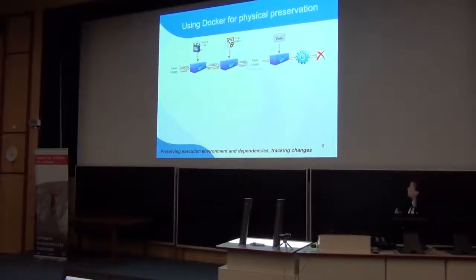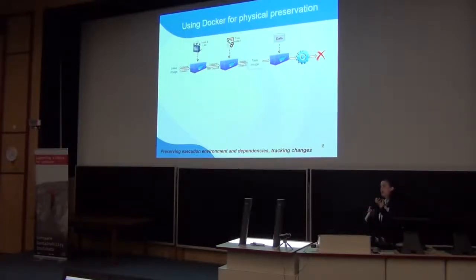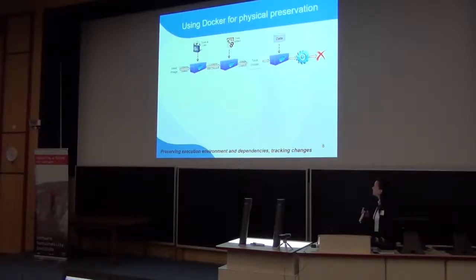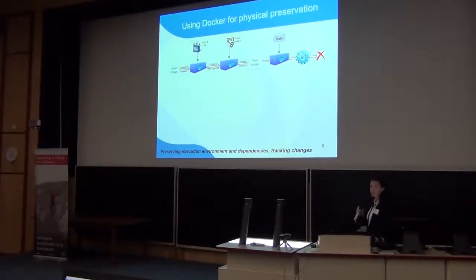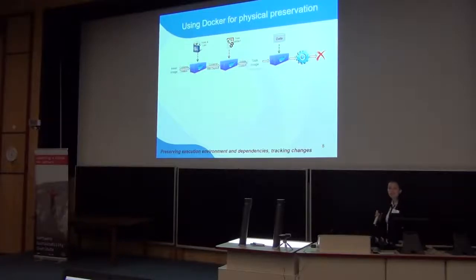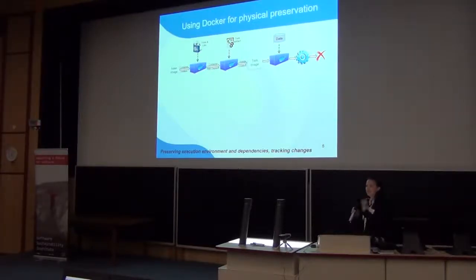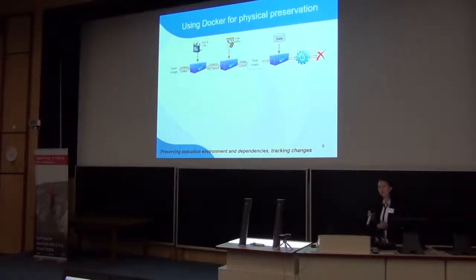For physical preservation, we have used Docker containers as the execution environment for each task. Starting with a base image compatible with the task, we create a container and then install on-demand all dependencies and packages needed to execute the task, then download the task. After that, using the scripts attached with the TOSCA description of the workflow, we create a task image that is compatible with the task version. Each task in our workflow is versioned using version control. After creating the task image, the data is fetched to the container and the task is executed.